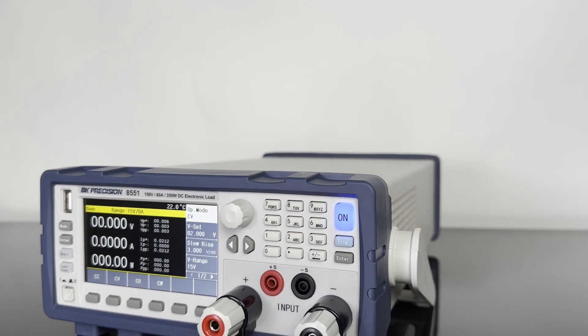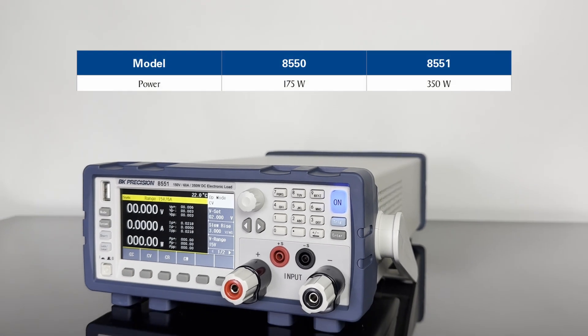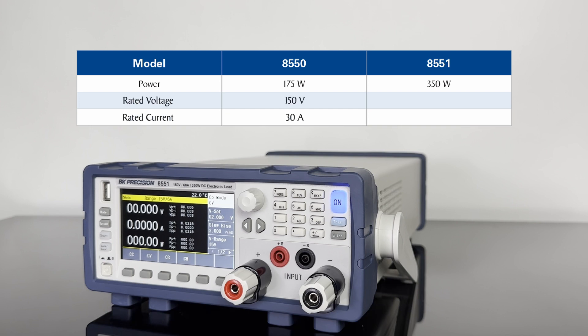This series consists of two models capable of sinking 175 watts and 350 watts of power. The 8550 is rated for 150 volts, 30 amps, and the 8551, 150 volts, 60 amps.